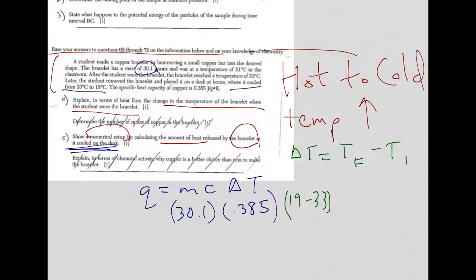And here's my numerical setup. Just be careful. New York State, sometimes the questions are tricky. The way around it, of course, you could have just calculated delta T, which was 14. So if you wanted to just put in 14 and just subtract the two numbers and get that over with, you could do that too. That's up to you.